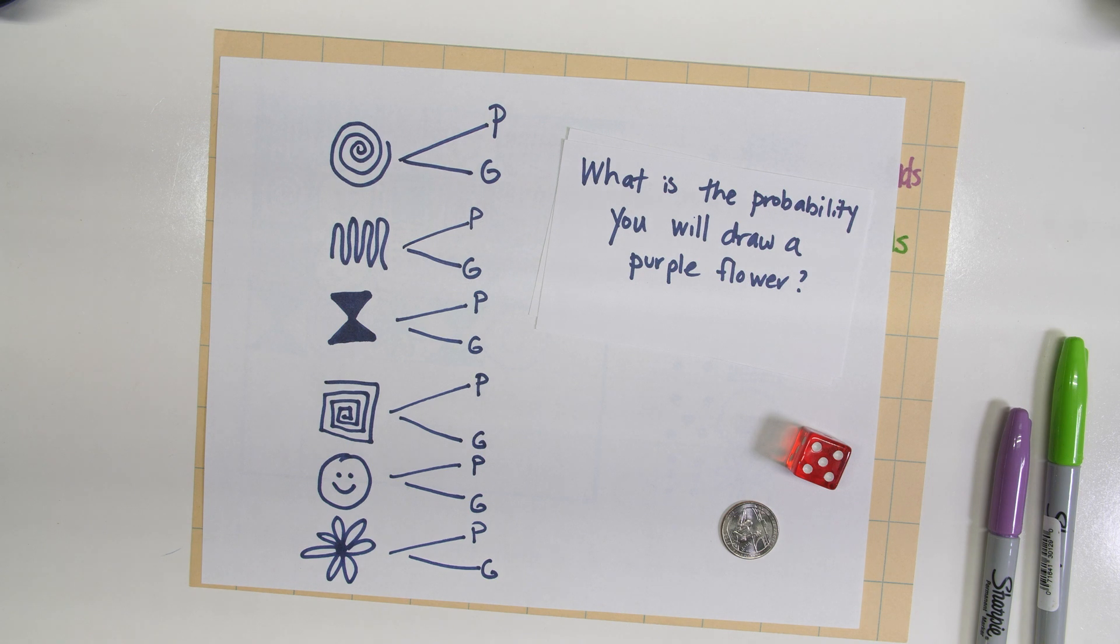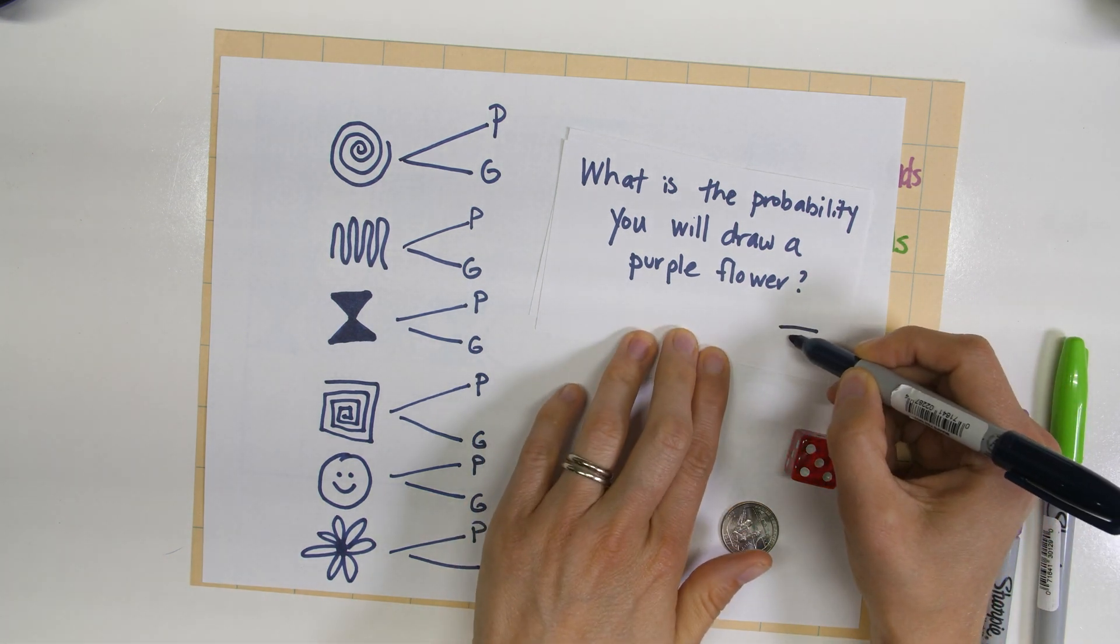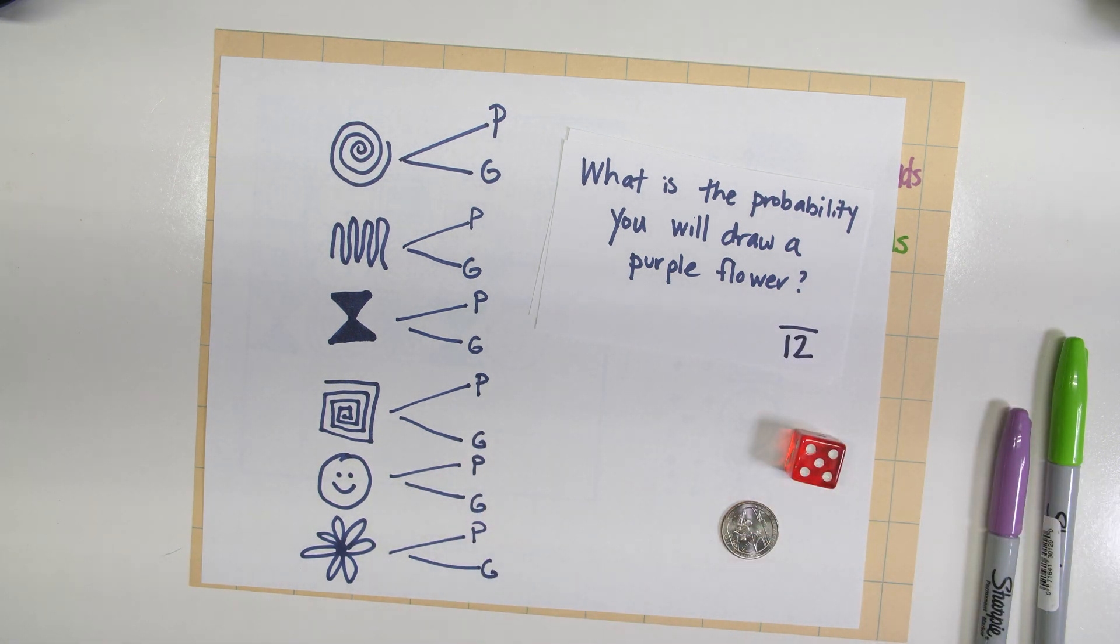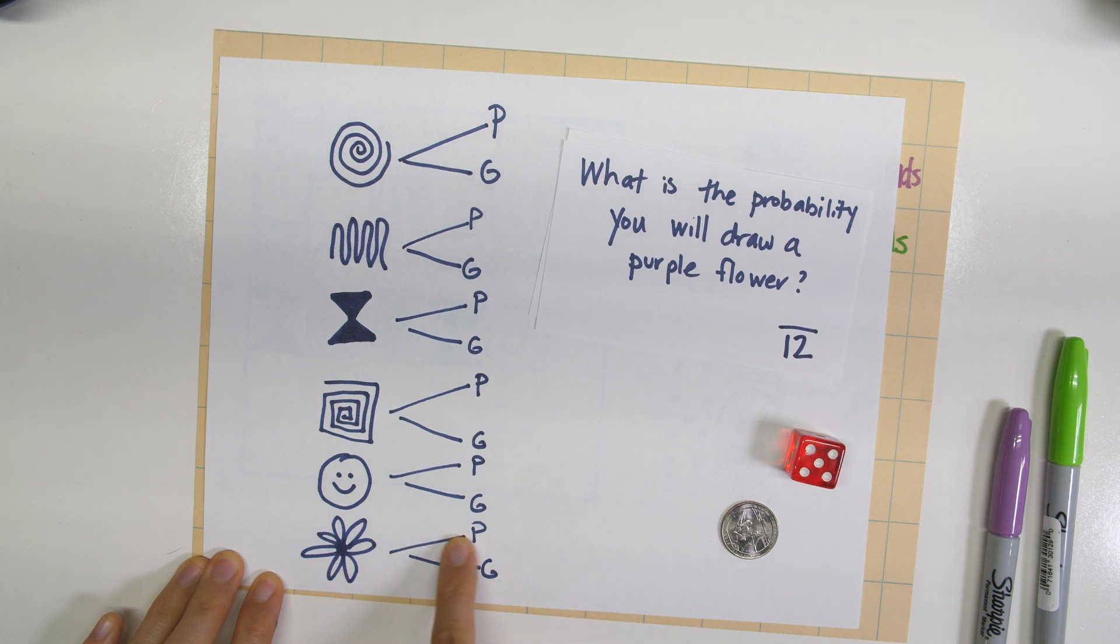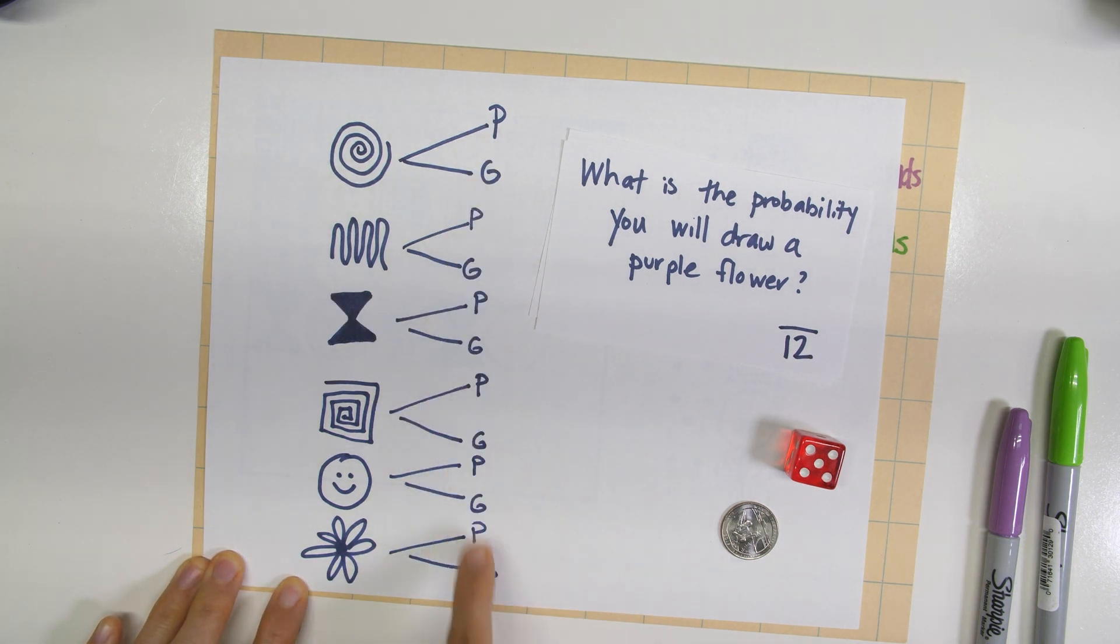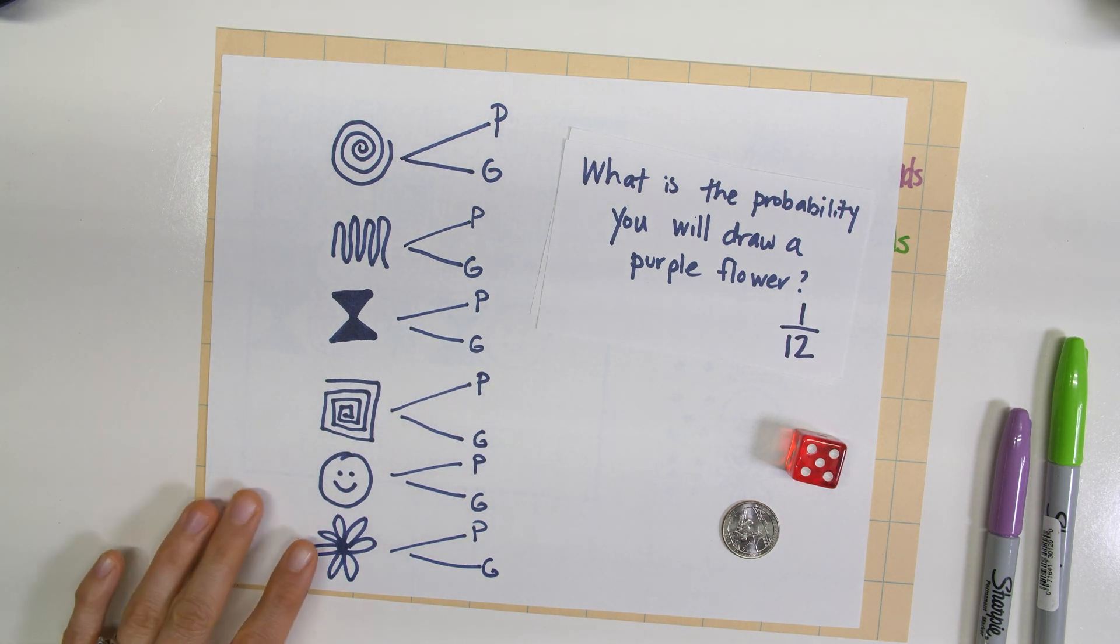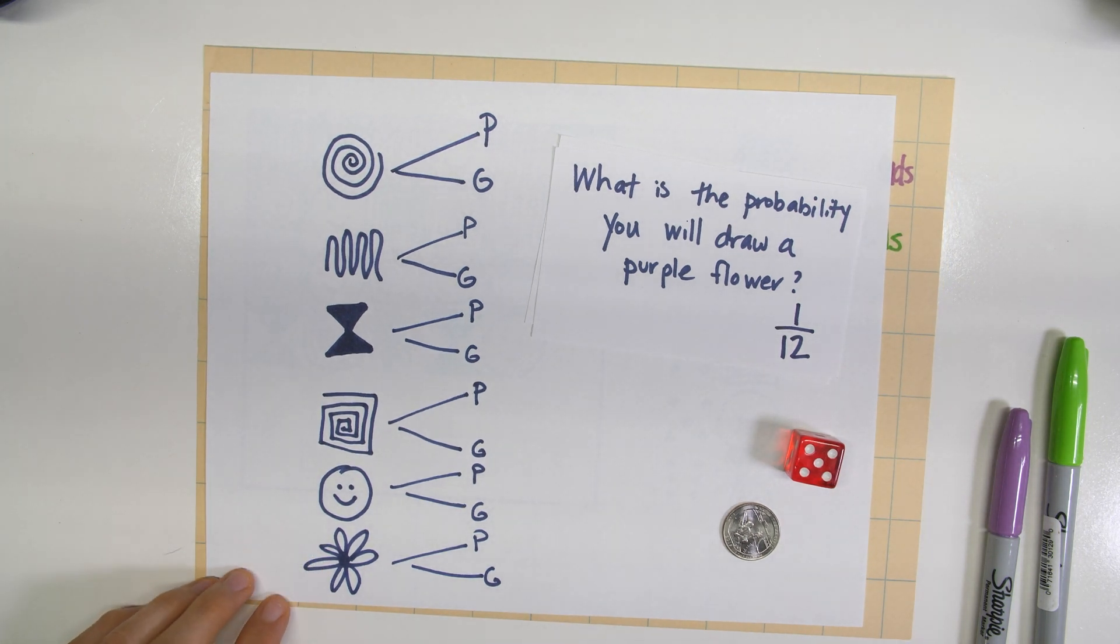My absolute favorite thing to draw is the purple flower, and I was kind of curious what is the probability that I would draw a purple flower. So we want to write the probability as a fraction, and the denominator is going to be all of the possible outcomes, and we just found that out - there are twelve of them. So now I want to look for the favorable outcomes, or which ones have a purple flower. So here's the flower and there's only one purple flower in all of the possible outcomes, so my probability of drawing a purple flower is one twelfth. That is pretty small, that's pretty unlikely that I will do that.